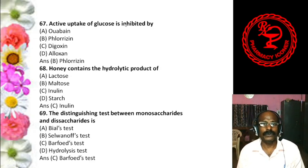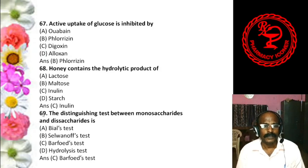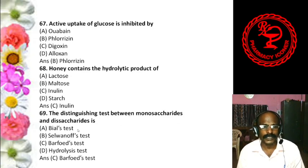Question 20: What is turanose? Options: A. Methyl sugar, B. Deoxy sugar, C. Non-reducing disaccharide, D. Reducing disaccharide of glucose and fructose. The answer is D — turanose is a reducing disaccharide of glucose and fructose. There are also other questions coming from turanose.